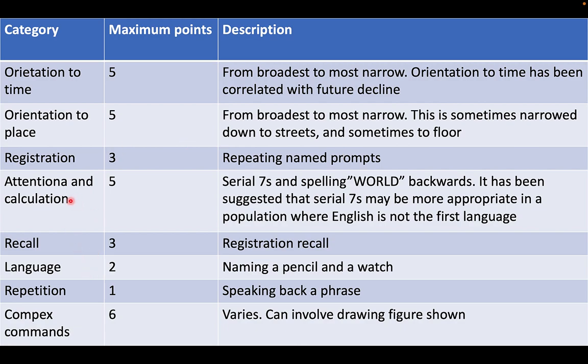Then you have attention and calculation, which is scored out of five. Here we do the serial sevens, and we also ask them to spell the word 'world' backwards. It has actually been suggested that the serial sevens is much more appropriate for those in places where English is not a first language. So this test actually has a lot of limitations, especially in our setup.